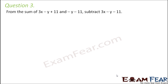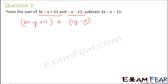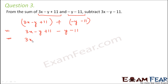Question number 3: From the sum of 3x minus y plus 11 and minus y minus 11, subtract 3x minus y minus 11. First we find the sum of the two expressions: 3x minus y plus 11 plus minus y minus 11. Rearranging like terms: 3x minus y minus y plus 11 minus 11 gives 3x minus 2y plus 0, so the sum is 3x minus 2y.